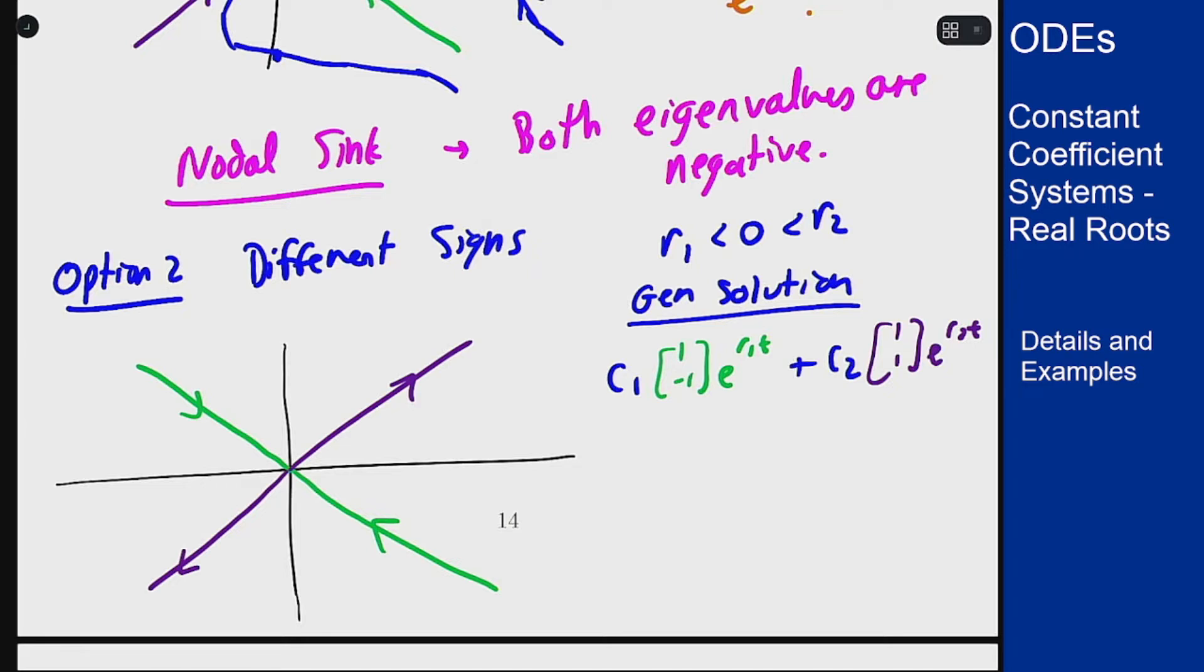For this it's now pretty easy what happens when we sketch out these plots. If I start in here when t gets bigger, the r1 term goes to zero and the r2 term grows because with r1 being negative e to the r1t goes to zero whereas r2 being positive e to the r2t goes to infinity.